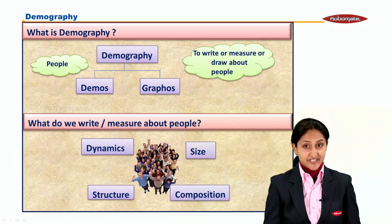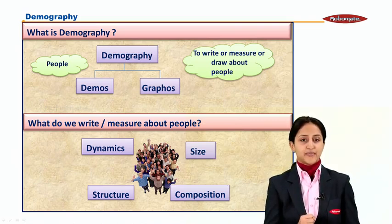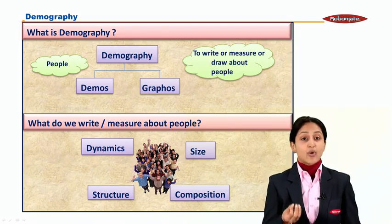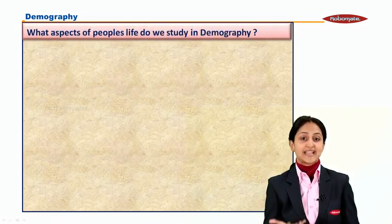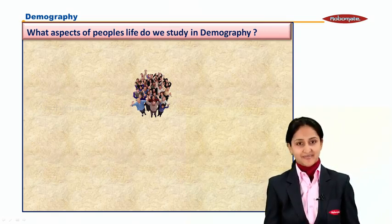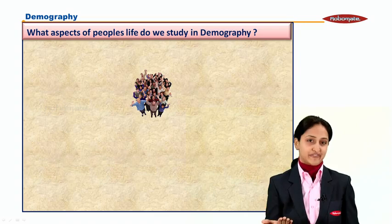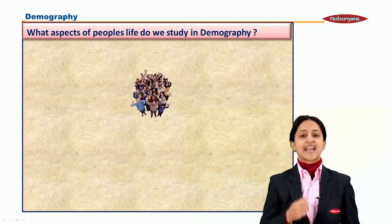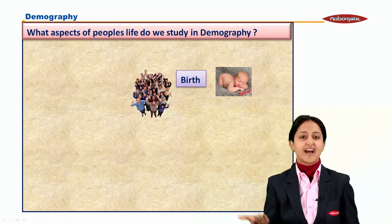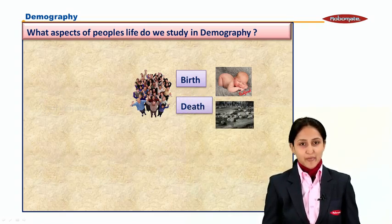So in demography, these are the various aspects we are going to measure about our population. The question arises — how are we going to measure this? We need to measure this by measuring the various aspects in the life of people. In the life of an individual, not many events or milestones occur. The first one being birth — definitely first we are born, that is when our life begins. And the last one being death — once we are born, we definitely have to die.